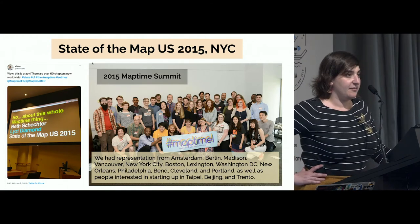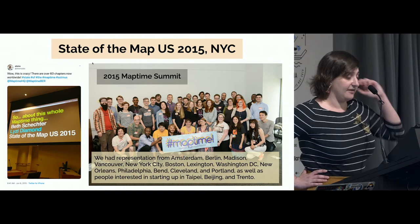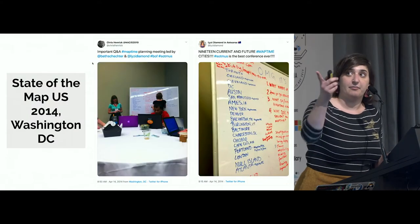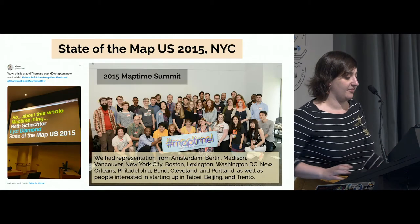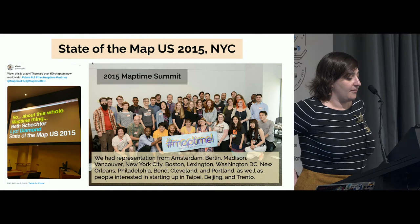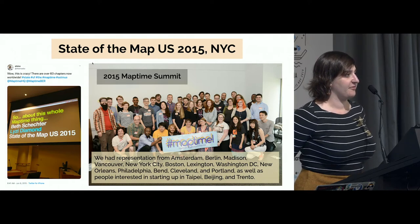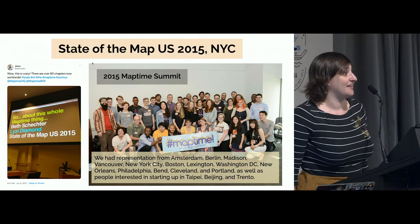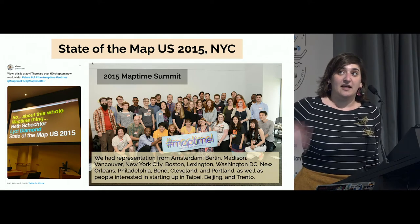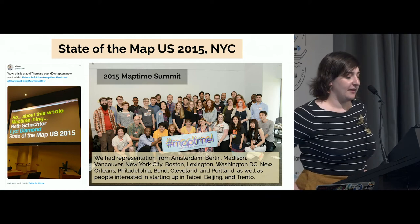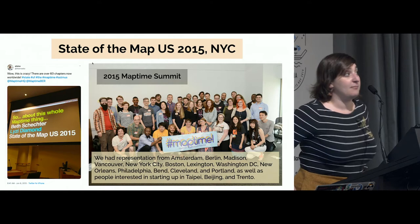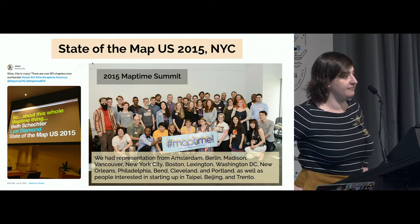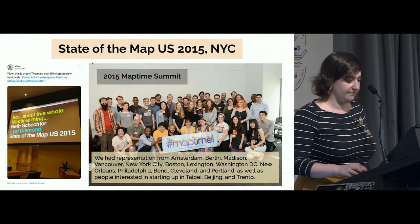One year later, at State of the Map 2015, there were 60 MapTime chapters. There was so much interest that we held a MapTime Summit — our second annual — with folks from all around the world. This conference was special because it was at the United Nations building. In that 2015 talk, we pitched MapTime as more than just people getting together wanting to talk about maps and build stuff, but really a set of ideals and a philosophy that could be perpetuated moving forward.